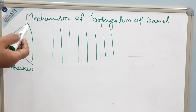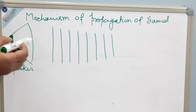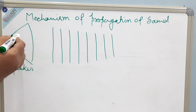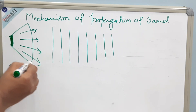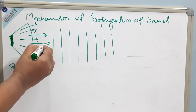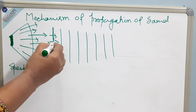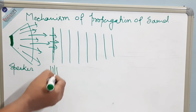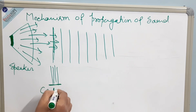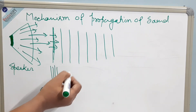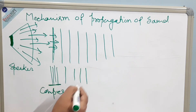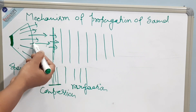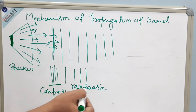Now I will speak about the mechanism of propagation of sound. This is a speaker, and this you can understand as undisturbed air — there is no force on the air molecules, they are in their own position. When sound is produced, it will travel in all directions. This energy will produce a force on the nearby molecule, so these molecules will become closer to each other. This part where the molecules are closer is known as compression. And the next area where the molecules are far from each other is known as rarefaction. The same process will continue, and the sound energy produced by the speaker will travel through the medium through compression and rarefaction.